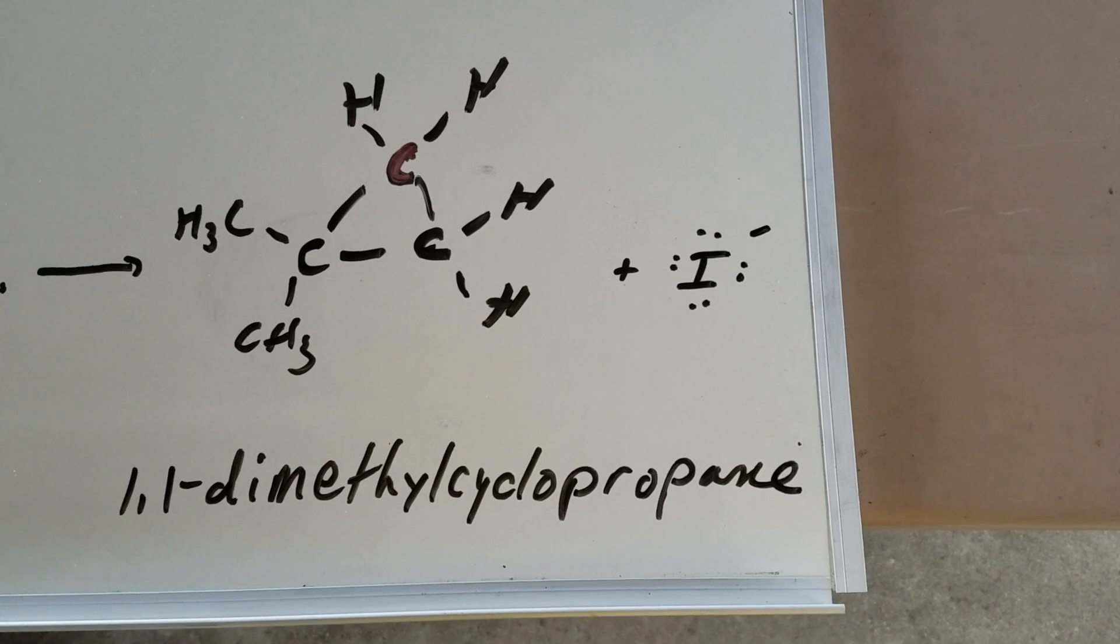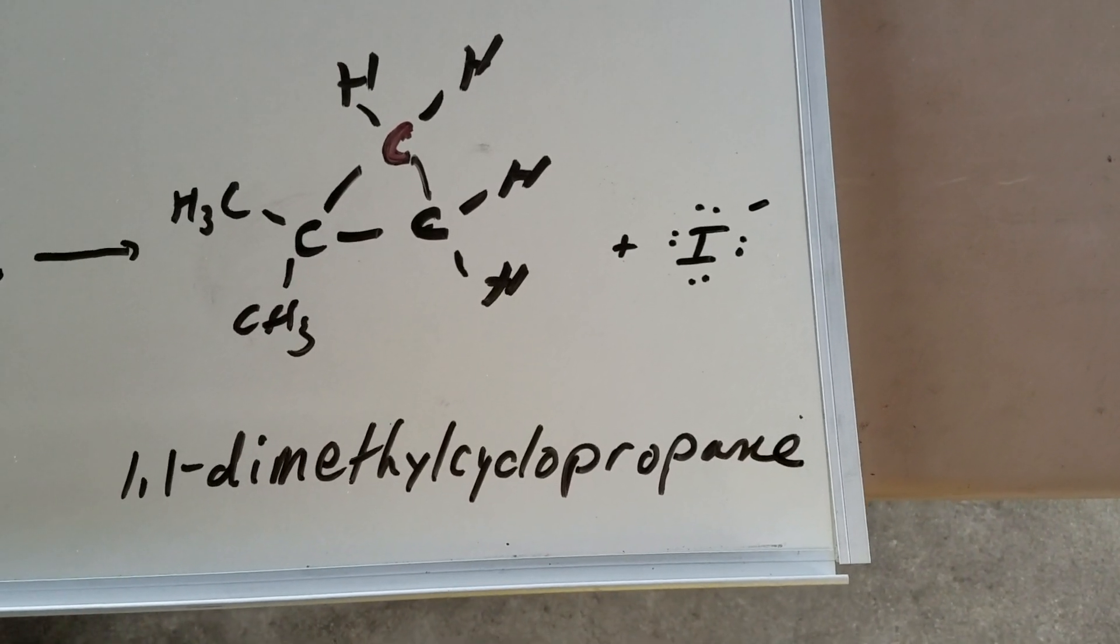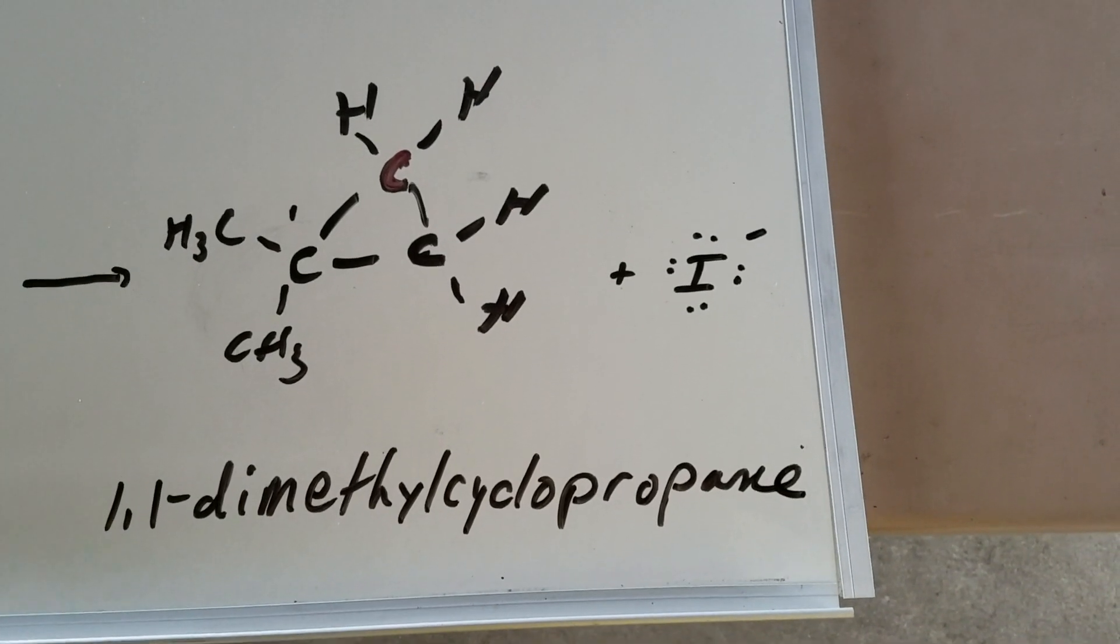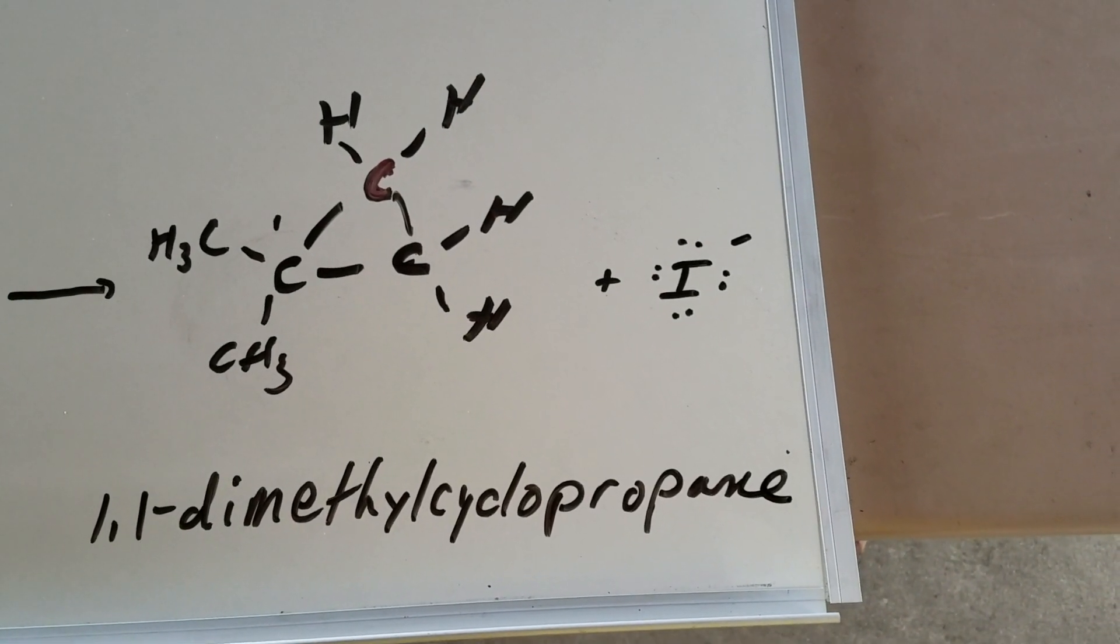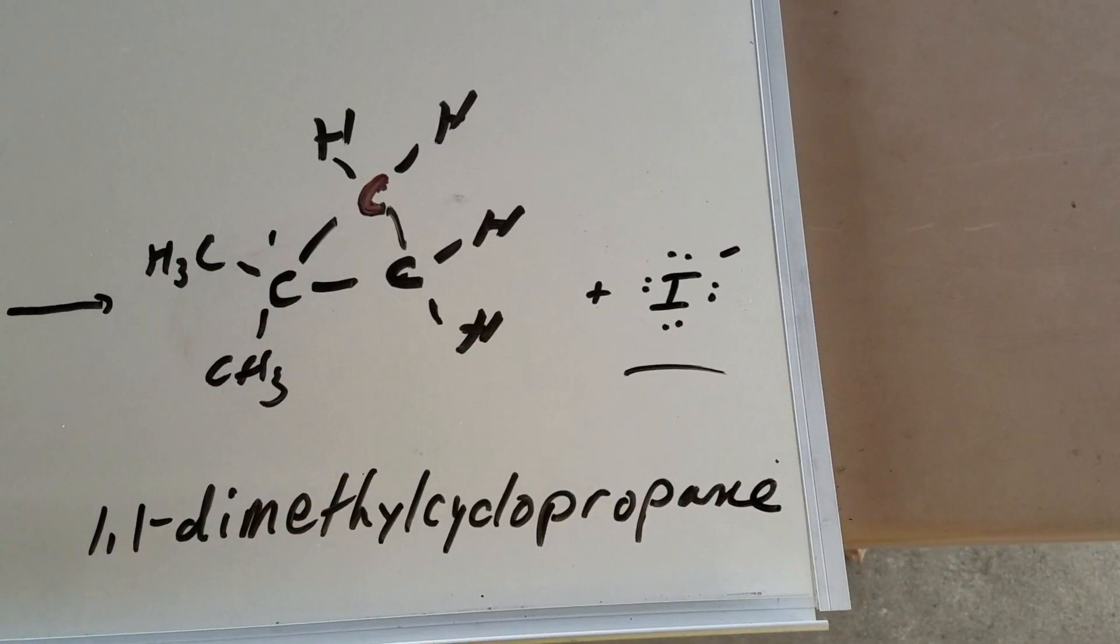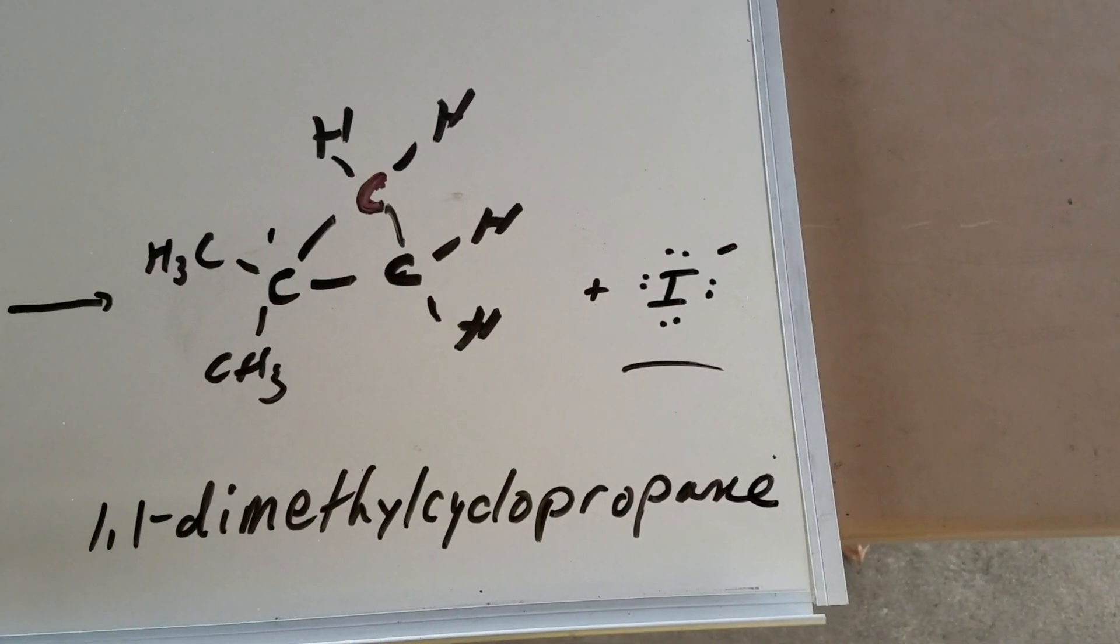This product being a cyclopropane. To name it, this is position one. This would be 1,1-dimethylcyclopropane. And then, of course, a leaving group is the highly stabilized iodide ion.